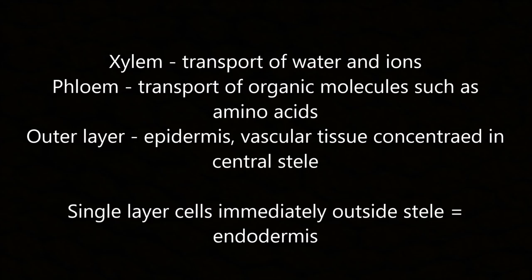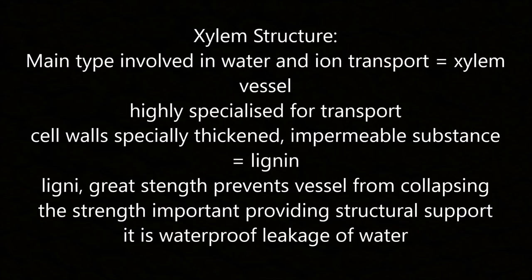The plant vascular system: the xylem transports water and ions, and the phloem transports organic molecules such as amino acids. The outer layer consists of an epidermis; vascular tissue is concentrated in the central stele. The single layer of cells immediately outside the stele is called the endodermis. The main type involved in water and ion transport is the xylem vessel, which is highly specialised with cell walls impregnated with an impermeable substance called lignin.